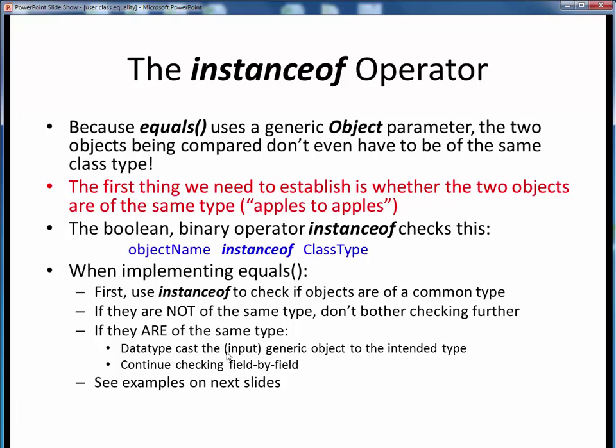But if they are of the same class type, then we would cast the generic object into the more specific class type, and then continue checking instance variables field-by-field, because now we know we're making an apples-to-apples comparison. Let's take a look at an example of how all this is done.